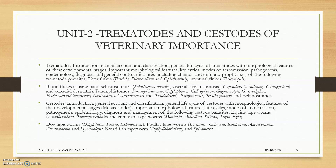Moving to Unit 2, we will be studying the trematodes and cestodes of veterinary importance. This includes liver flukes, blood flukes, and cestodes. We will be covering mainly Anoplocephala, Paranoplocephala, Moniezia, ruminant tapeworms, equine tapeworms, poultry tapeworms, dog tapeworms, and broad fish tapeworms. We will be studying the life cycle, important morphological features, transmission, pathogenesis, epidemiology, diagnosis and general control measures, and the zoonotic aspect of these parasites.